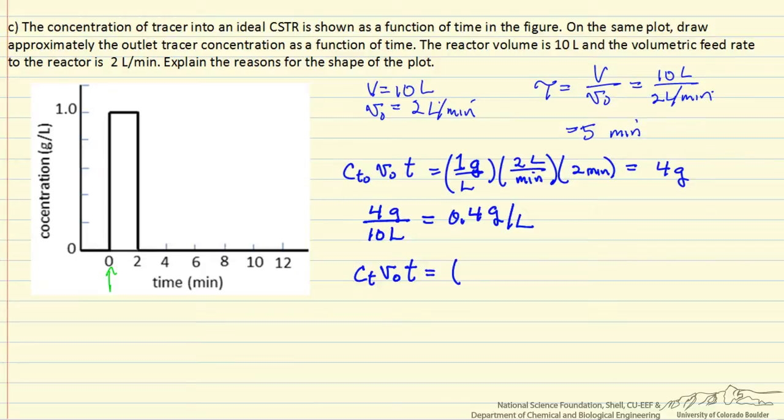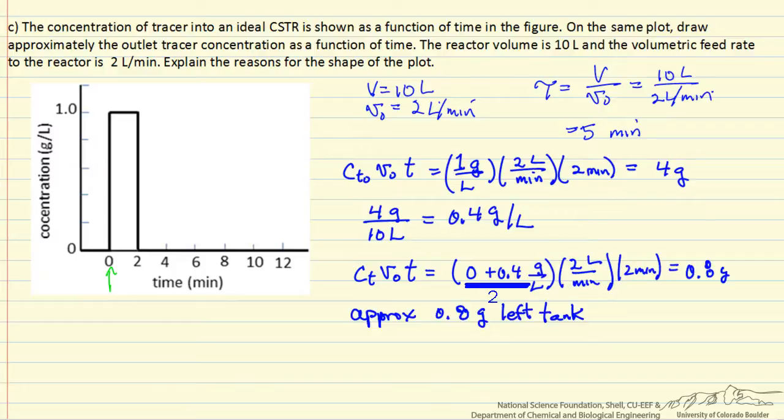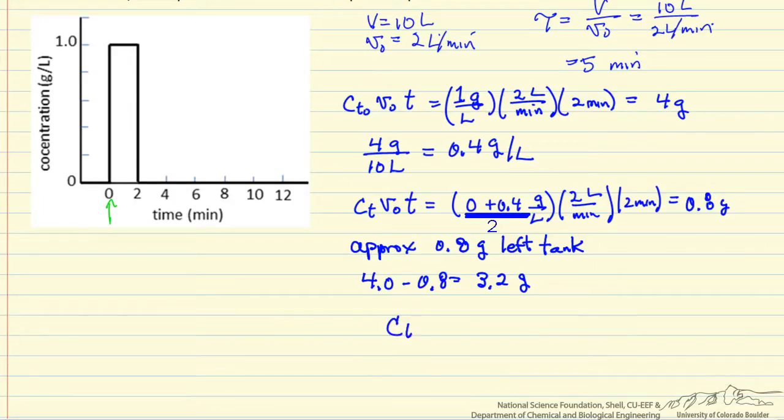So we could estimate this. We could say the concentration in the tank times the volumetric flow rate times the time. This would give us an estimate. Of course the concentration in the tank is changing. It starts at 0, it ends at 0.4. So let's take an average of these two, and so that gives us an estimate times the same 2 liters per minute, and the same 2 minutes. So approximately 0.8 grams left. We added 4 grams. So 4 minus 0.8 means we have about 3.2 grams in the tank, which means our estimate of the tracer concentration at 2 minutes is 3.2 grams over 10 liters, or 0.32 grams per liter. So the concentration in the tank would increase, starting at 0 and increasing to about 0.32.